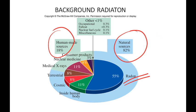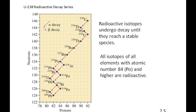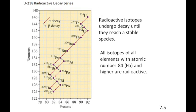Radon is a natural decay product — right here from Uranium-238. Uranium-238 is found all over the Earth's crust, and as it naturally decays, it will decay to radon-222. The source is natural; it's just part of the decay series of Uranium-238. More about the problem with radon-222 will be covered towards the end of the second lecture.